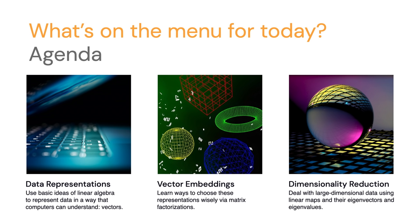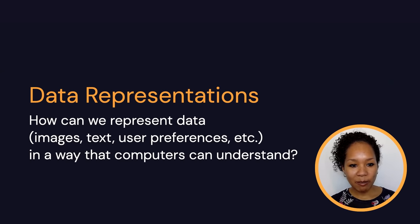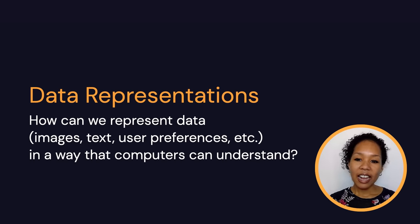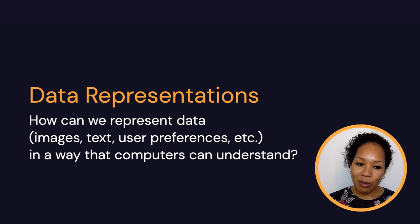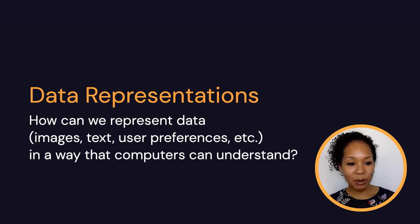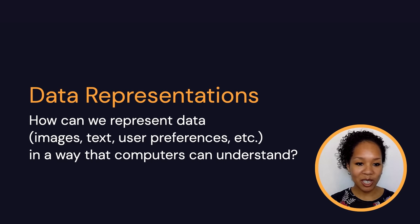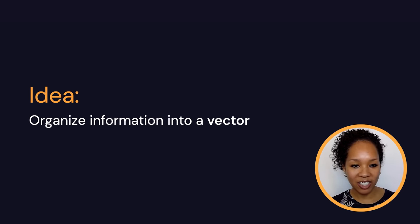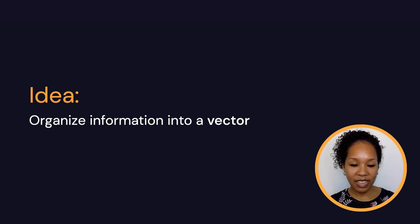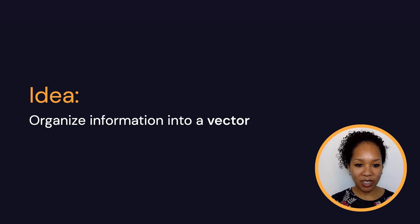Let's start with the first one: data representations. What do I mean here? The answer to the very simple question of how can we represent data like images, text and language, or user preferences in a way that computers can understand? If you try to think of the answer, maybe the first thing that comes to mind is that computers understand numbers really well. And indeed, the big idea behind data representation is that one simply organizes information into a vector.